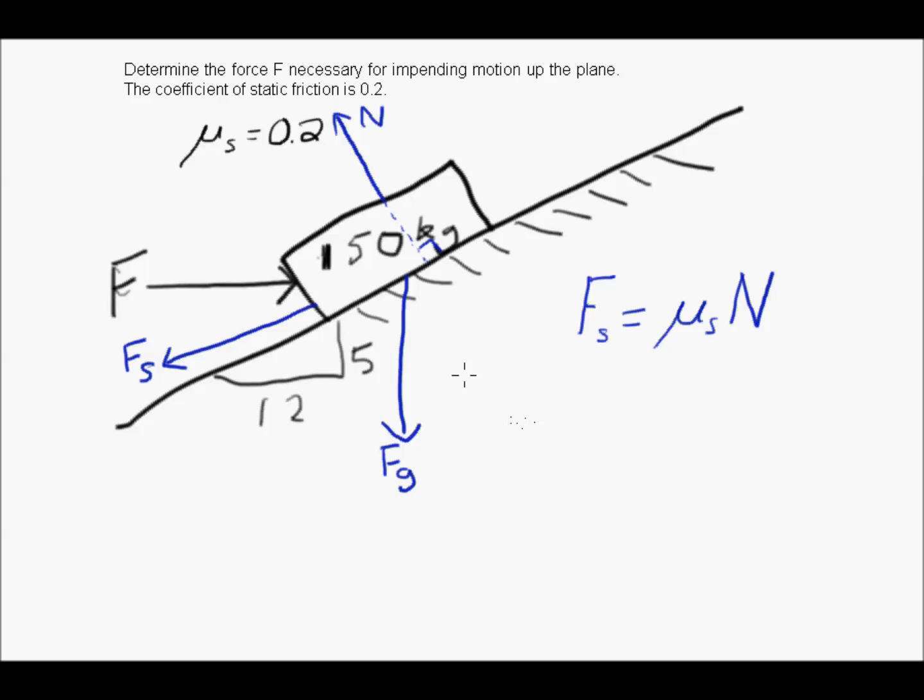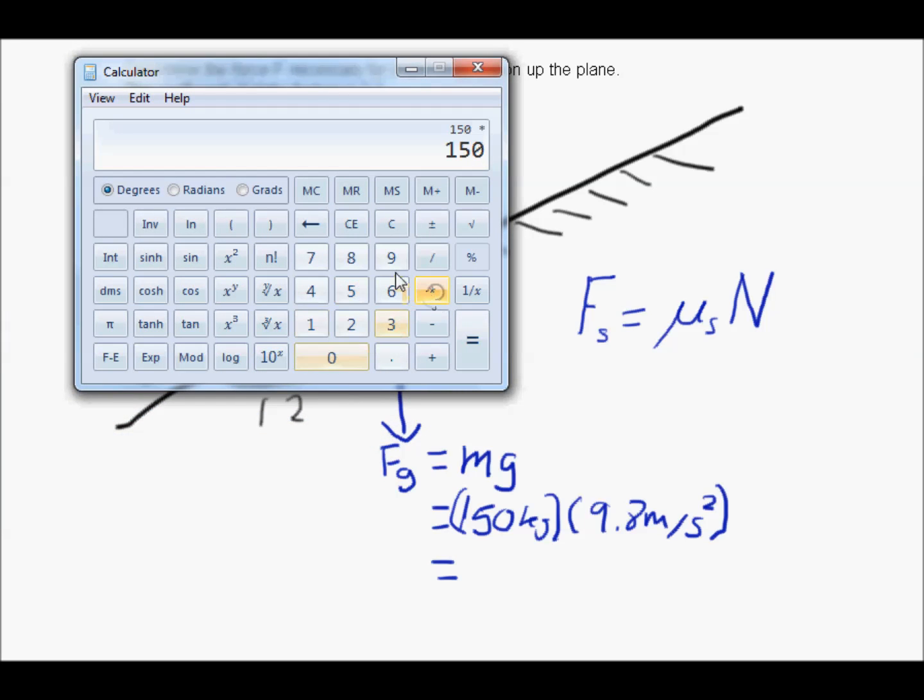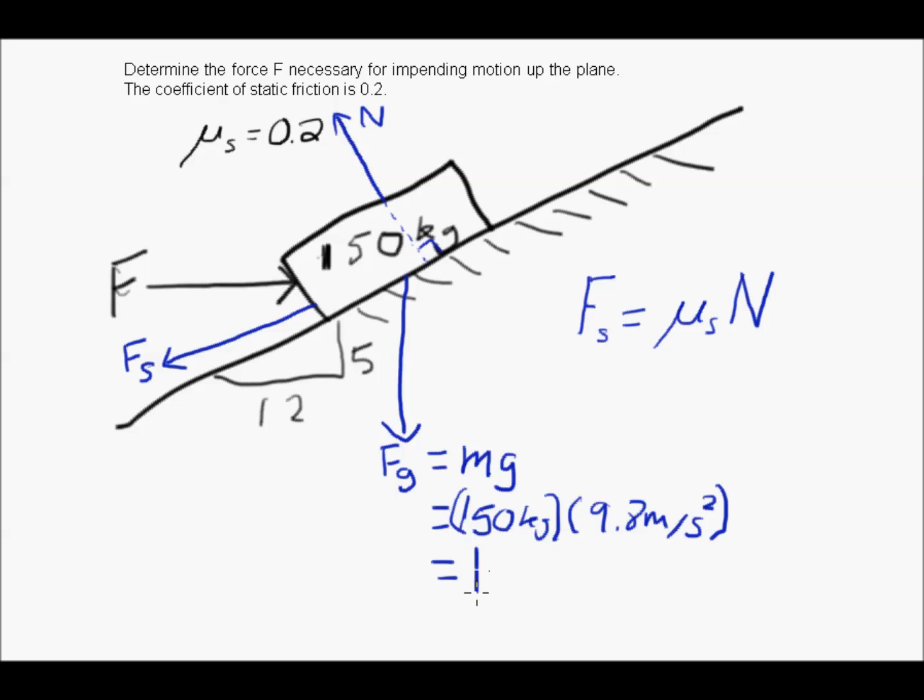Now since we know that this block is 150 kilograms, I can figure out the force of gravity or the weight right away. Fg is going to be equal to mass times the gravitational acceleration, which is 150 kilograms multiplied by 9.8 meters per second squared. 150 times 9.8 equals 1470 newtons. So I know one of the forces already. Now the question is asking what this force is.